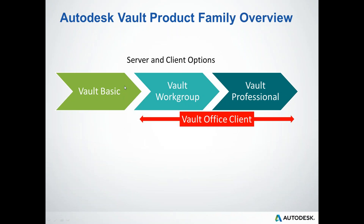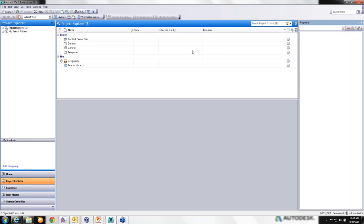There are three different levels of Vault Server — Basic, Workgroup, and Pro — with corresponding clients. If you have a Workgroup or Pro server, you can add Vault Office licenses for non-CAD users to create and edit non-CAD files, participate in workflows, review and sign off on CAD files, or just do Search-View-Print. The Search Interface in Vault — whether Workgroup, Pro, or Office — allows a simple single-value search or multiple search parameters.